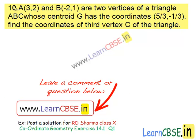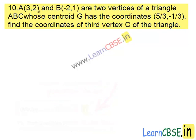Chapter 14, Exercise 14.4, Tenth Question. A and B are two vertices of a triangle ABC whose centroid G has the coordinates 5 divided by 3, minus 1 divided by 3. Find the coordinates of third vertex C of the triangle.